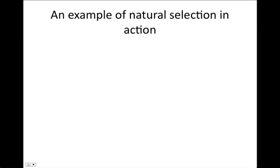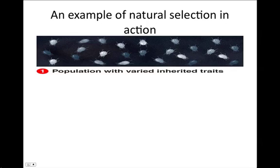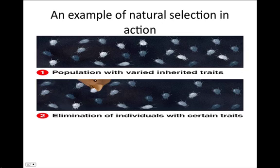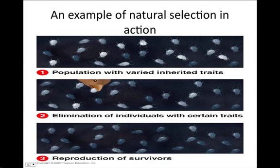An example of natural selection in action: imagine a population of beetles that vary extensively in the color inherited, from very light gray beetles to a dark charcoal color. A predatory bird eats the beetles it sees most easily — the light colored ones. The selective predation favors the survival and reproductive success of the darker beetles. The surviving beetles reproduce, and more beetles with a dark exterior emerge.